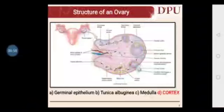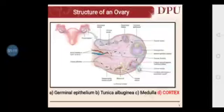The structure of the ovary is divided into four layers. The outermost layer is called germinal epithelium, made up of epithelial cells. Next to it is tunica albuginea, made up of connective tissue. In the middle is the ovarian medulla, consisting of connective tissue, blood vessels, lymphatic vessels, and nerves. Surrounding the medulla is the ovarian cortex, where all follicle development and oocyte maturation takes place.